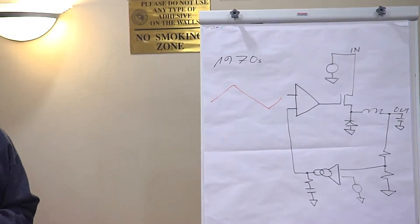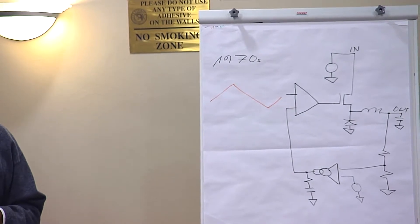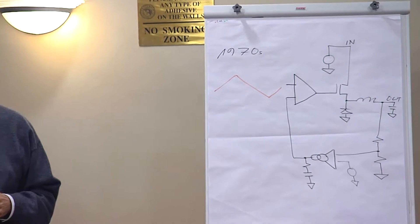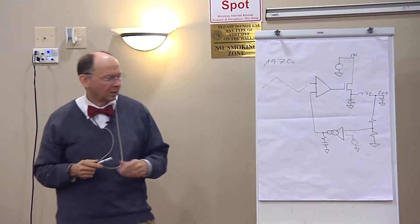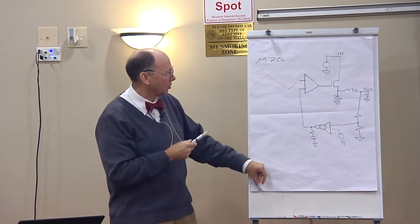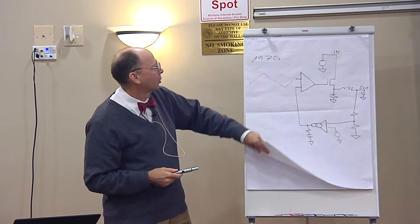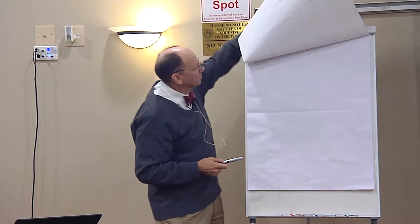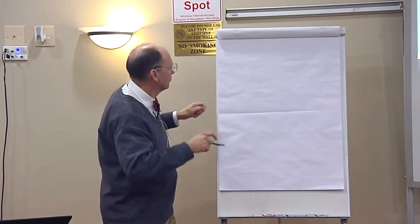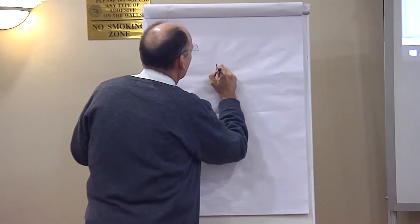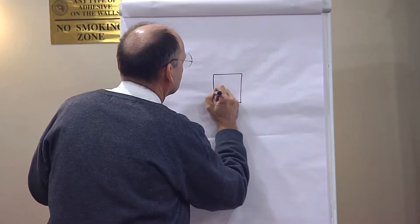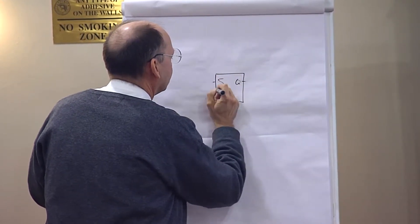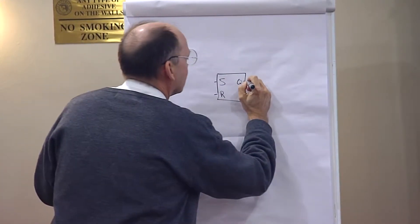In 1978, current mode was invented - a vastly superior way of controlling a switch-mode power supply. Whereas voltage mode is a glorified comparator, current mode is a glorified flip-flop: set, reset, and output - that's the thing that controls the switch.